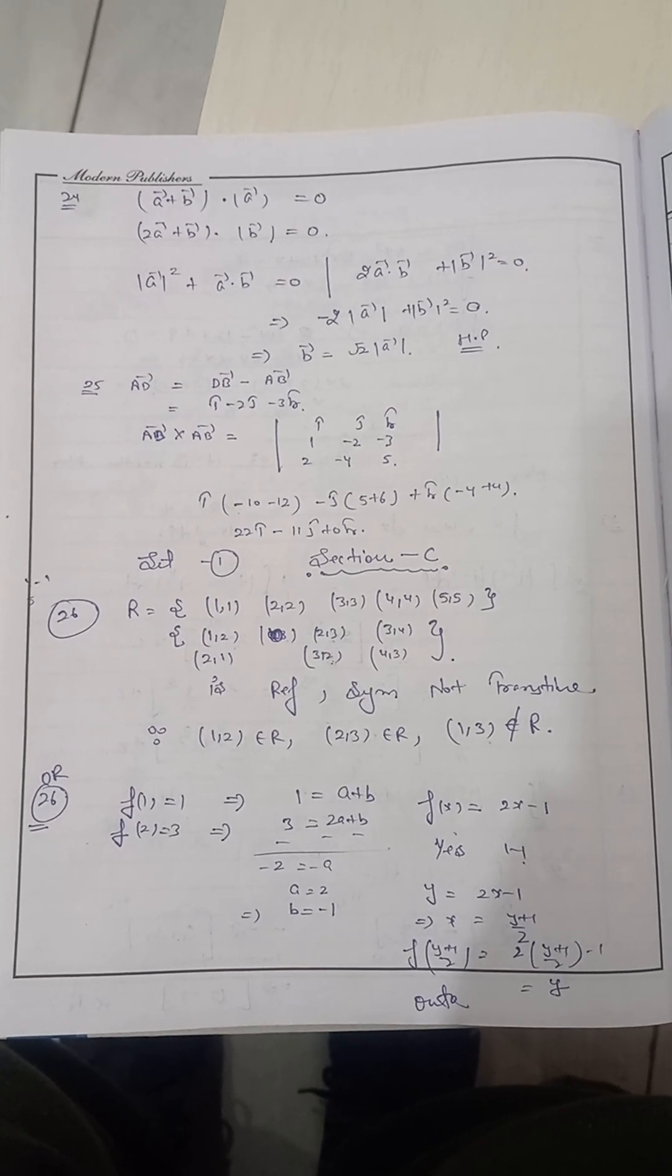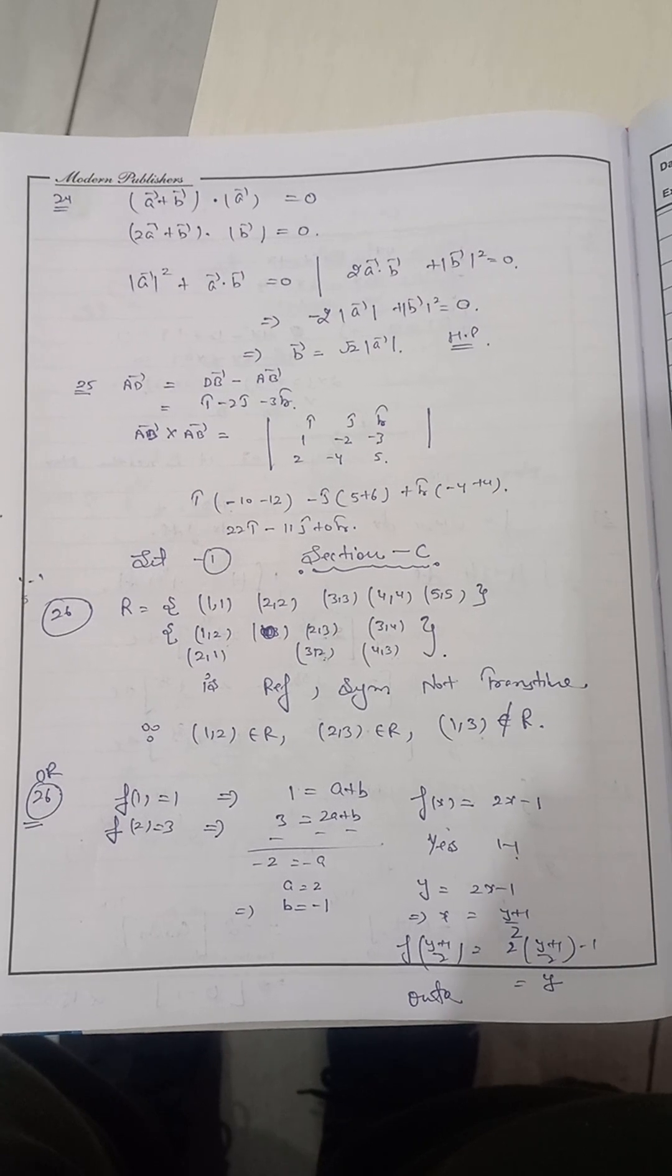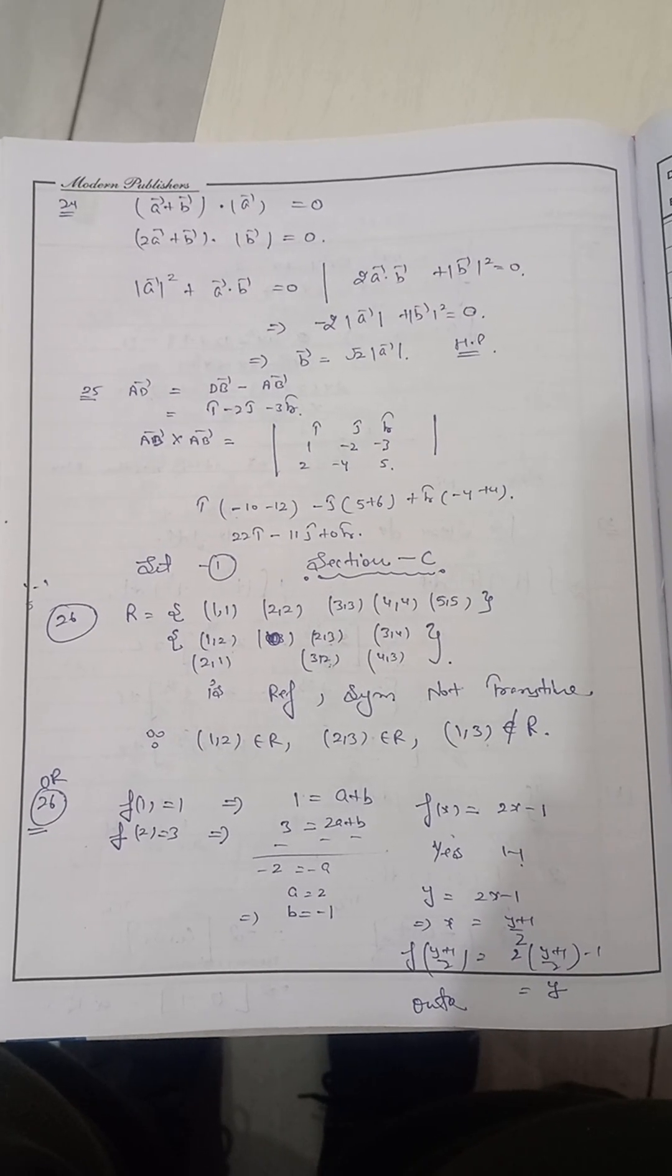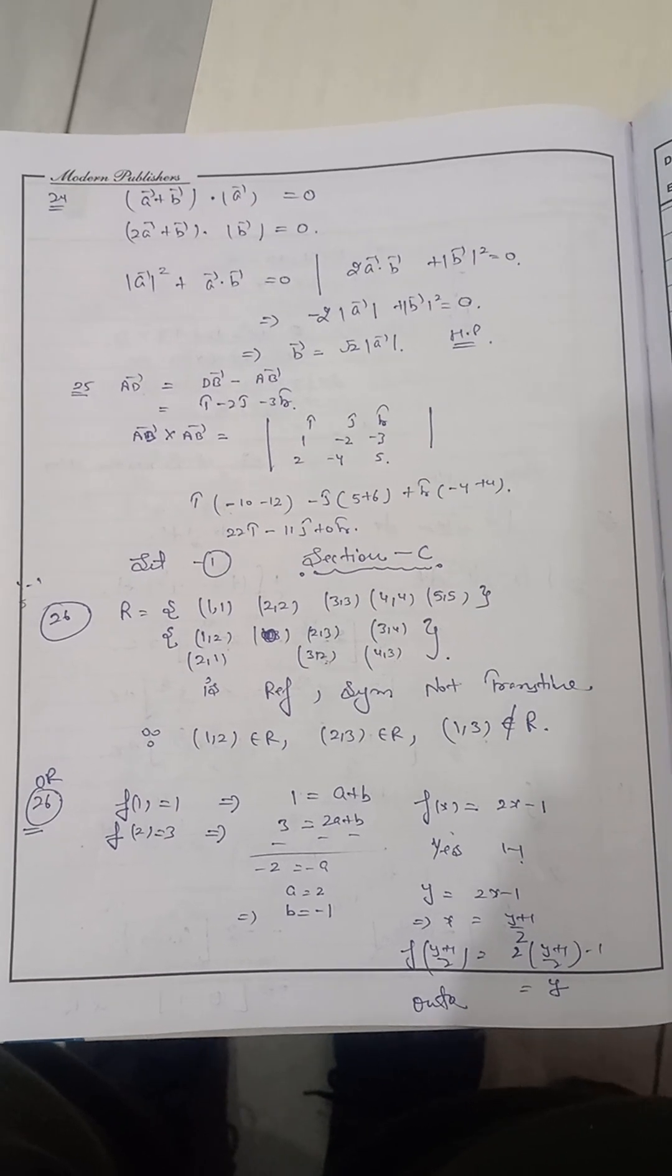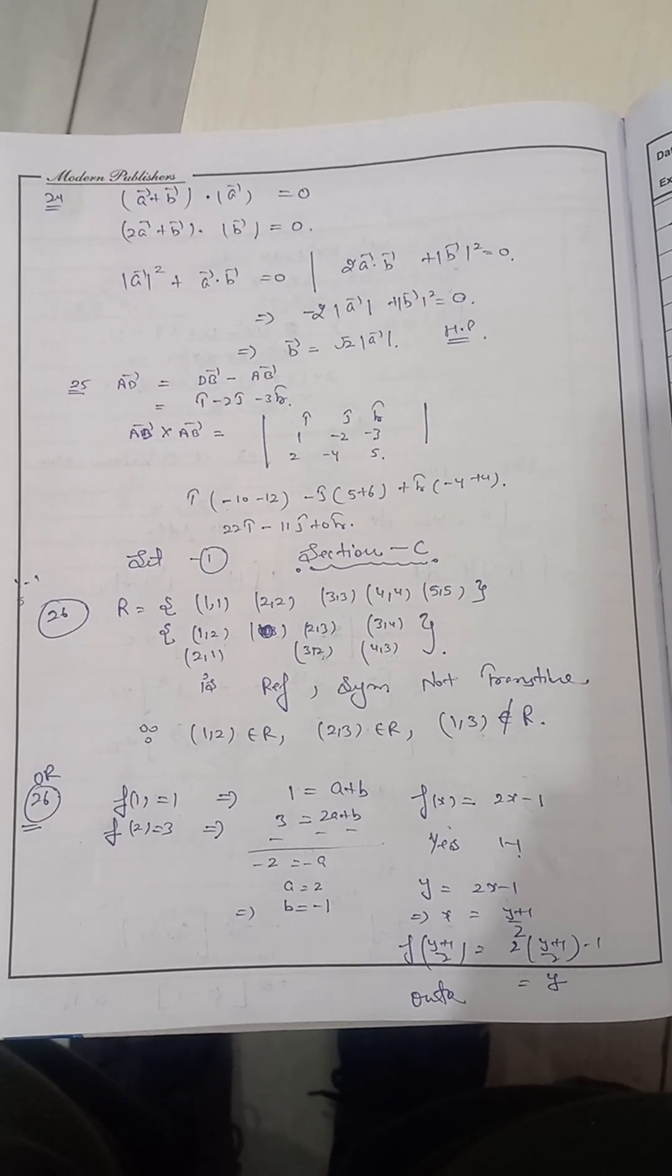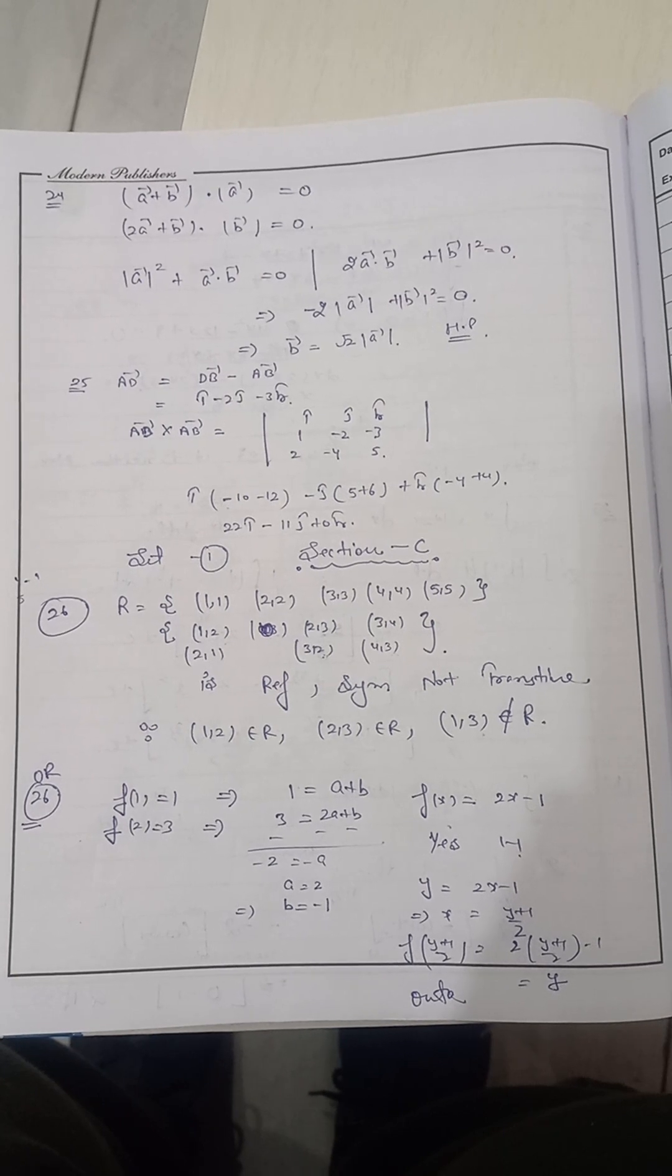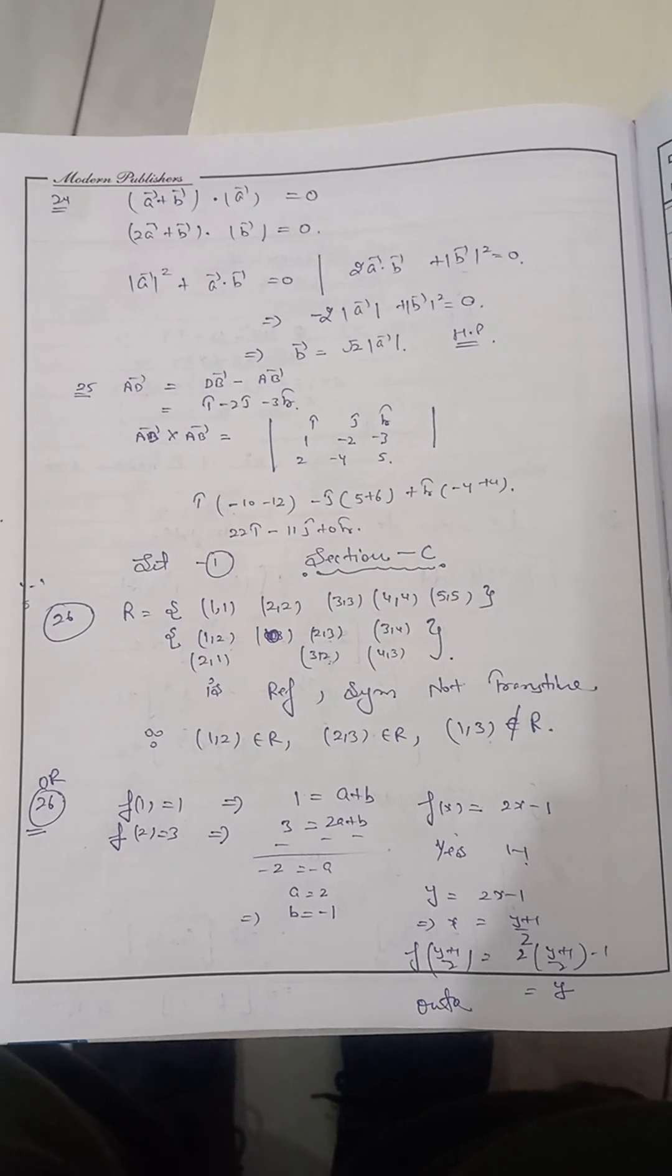Question number 26, it is given to us that we have to make a set, we have to make a relation like that the values are less than 8. So according to that value, I have made the sample space elements. Afterwards, I have checked that it is reflexive and symmetric, not transitive.